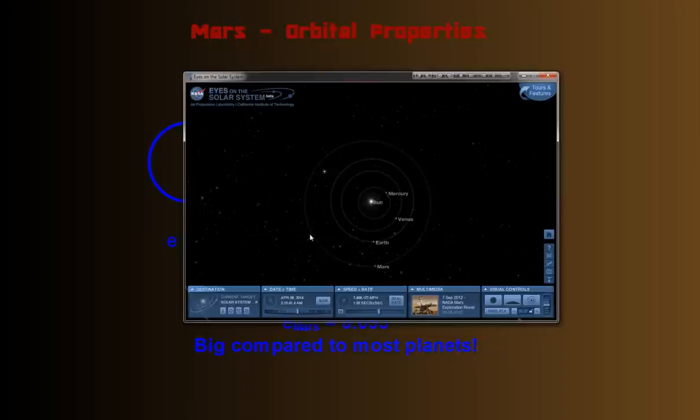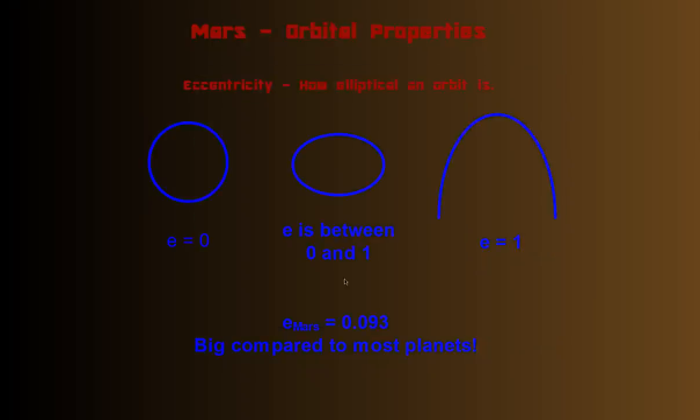When you look at Mars' orbit, it looks like a circle, pretty much. It's kind of hard to tell with these other planets kind of distracting you, but if you try to focus on Mars' red orbit here, it looks pretty circular. But it is an ellipse. In fact, it's one of the larger ellipses compared to most of the planets in our solar system. Earth's is quite a bit smaller, and more closer to a circle.